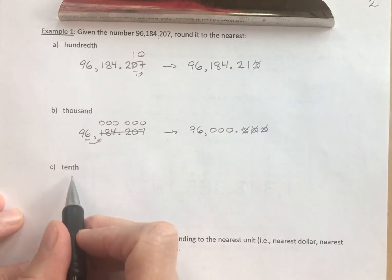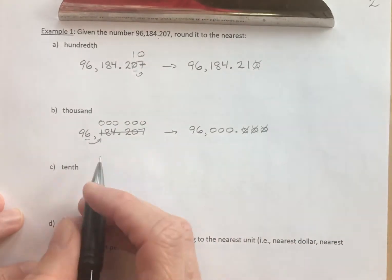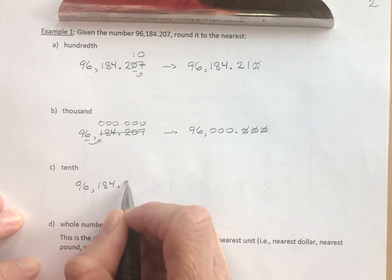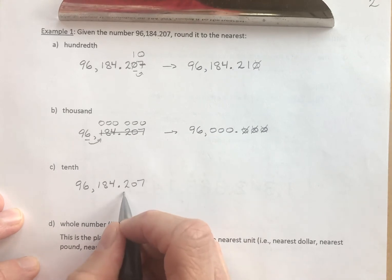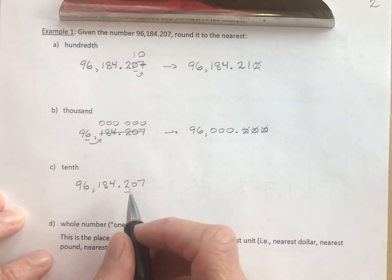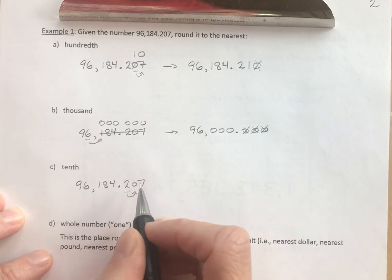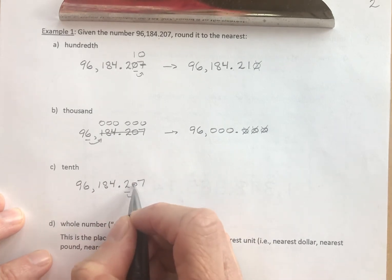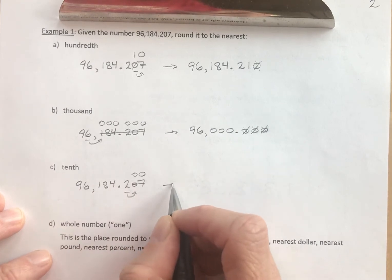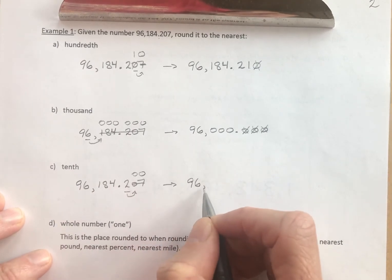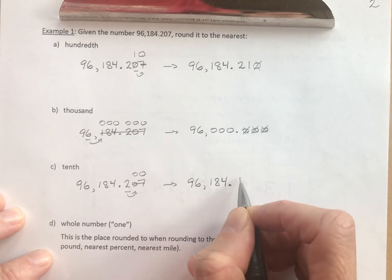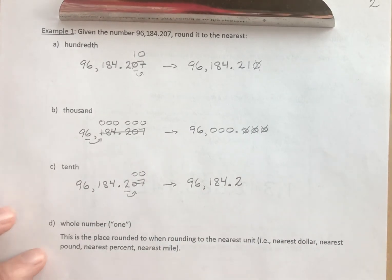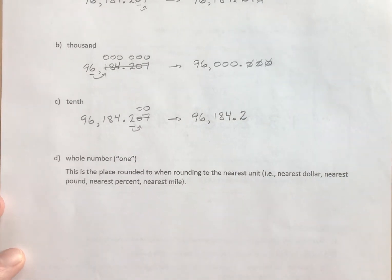How about rounding to the nearest tenth? Starting with 96,184 and 207 thousandths, the tenths place is the two. We look to the right and see a zero. The zero is less than five, so the two does not change. Everything after the two becomes a zero. To the nearest tenth, the result is 96,184 and 2 tenths. We stop at the tenths place — those extra trailing zeros are unnecessary.